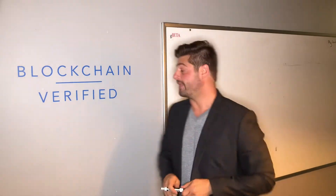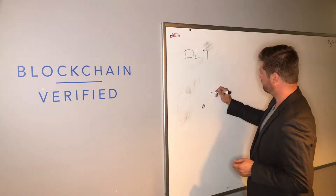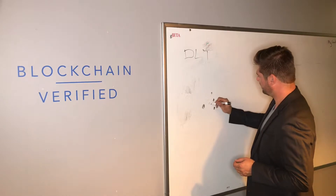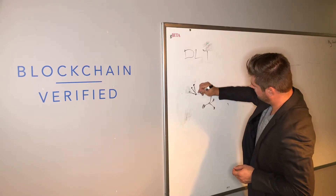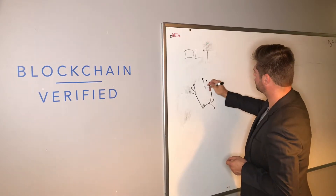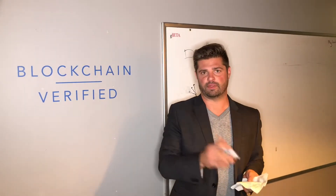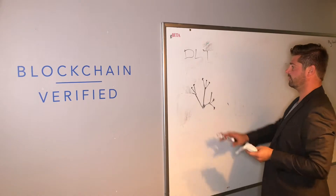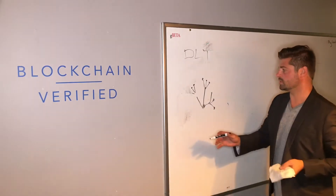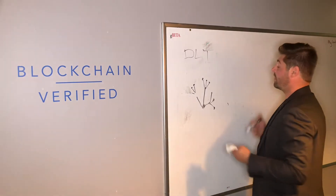The next type of computing network is a decentralized computing network. That also has some semblance of a central computer, but then you have other computers connected that can talk to that central node. This is kind of what the internet uses — a combination of this and distributed. If somebody takes out one computer it's okay, the network is still fine; if another goes down we may have some issues, but other branches still exist.